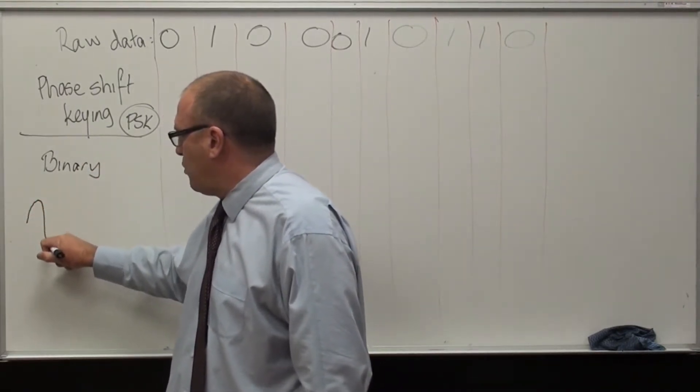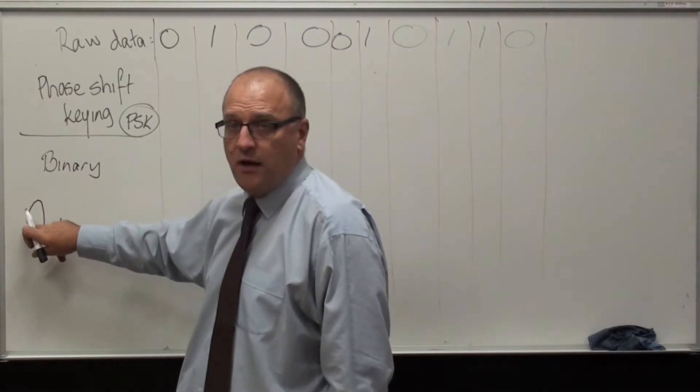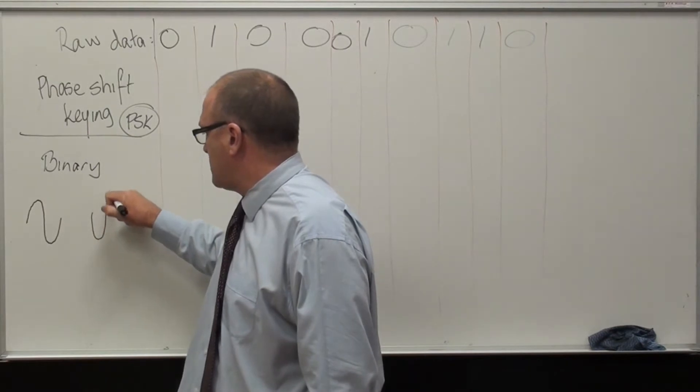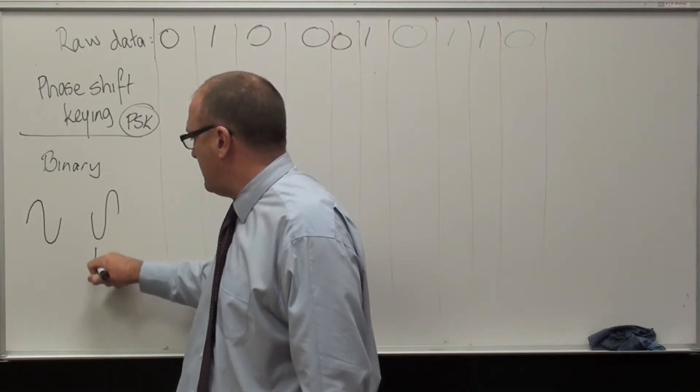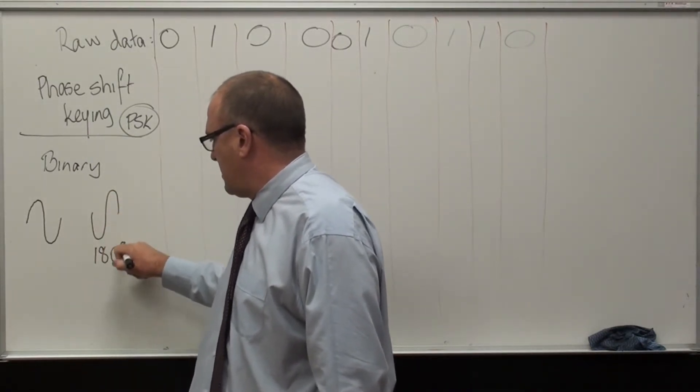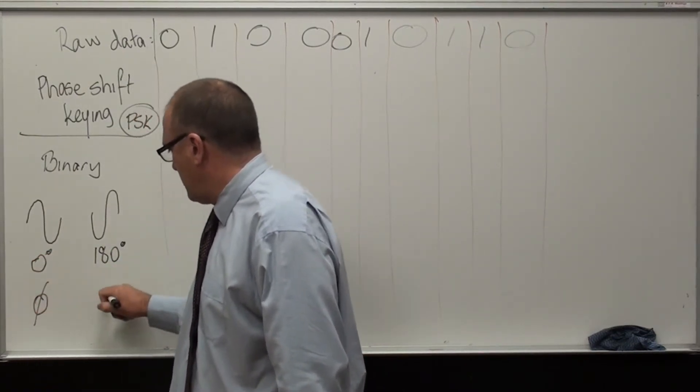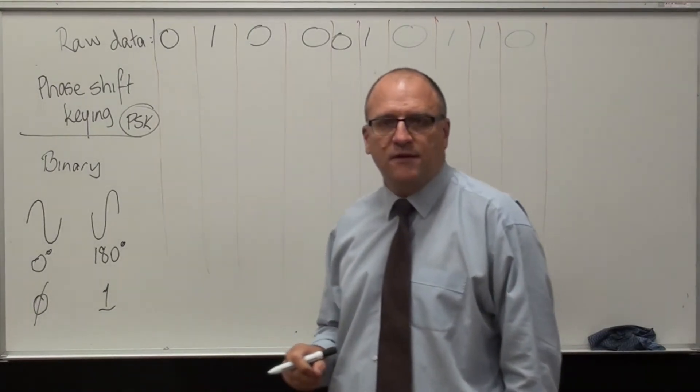We can either have a waveform that starts at a phase of zero or a waveform that starts at a phase of 180. So that's 180 degrees, that's zero degrees. That can be a zero, that can be a one. It all depends on the definition.